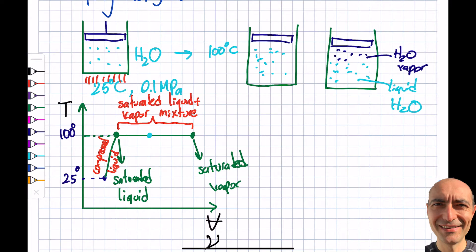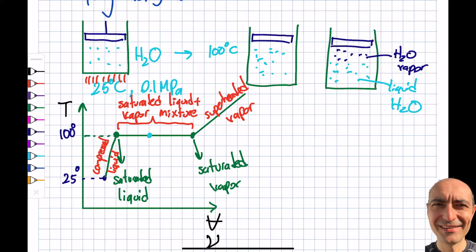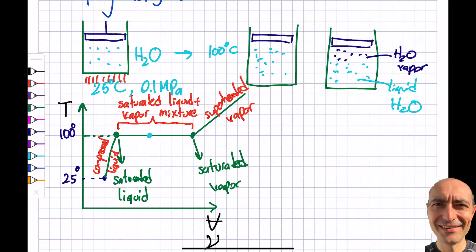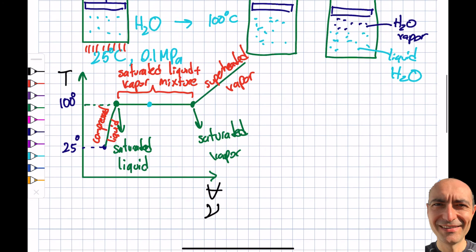We don't have to stop at 100°C. If I keep adding heat beyond the saturated vapor point — say I want a 200°C system — the system continues heating and enters what is called the superheated vapor region. Please know these definitions very well: superheated vapor, saturated liquid–vapor mixture, compressed liquid — because the property tables are organized by these exact categories.